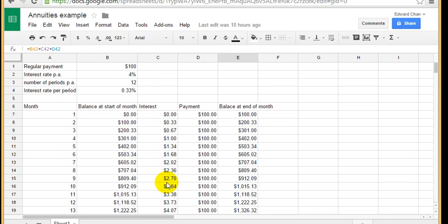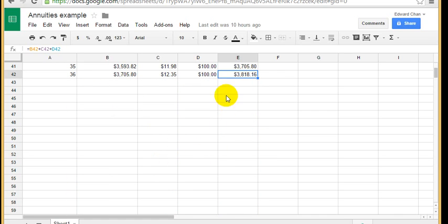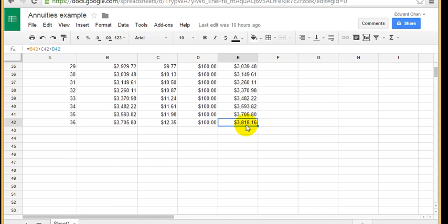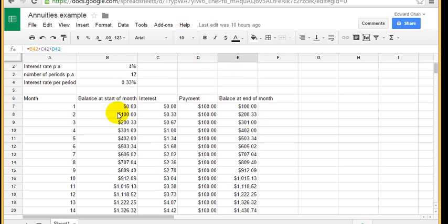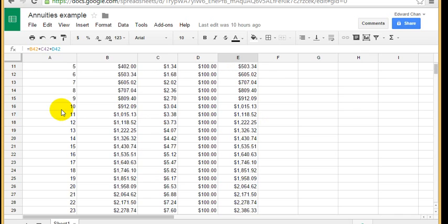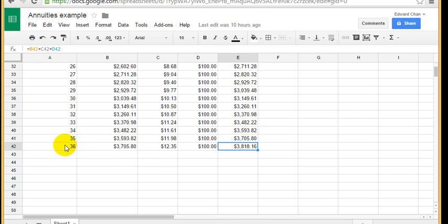Right, so now we're going to show you how to find out the answer without using a spreadsheet. Because using the spreadsheet it takes a while and you can see here right now I have 36 rows just to figure out this information. Whereas I could just put some numbers into a formula and I will get $3,818.16 as the answer straight away.